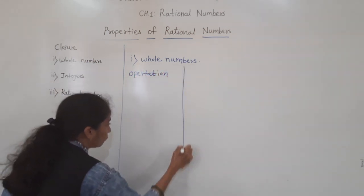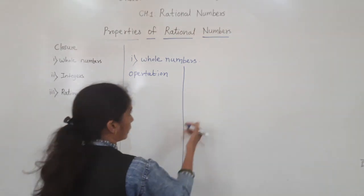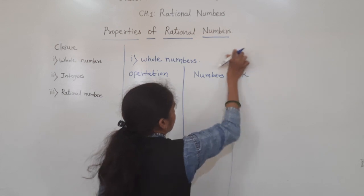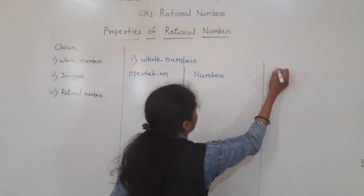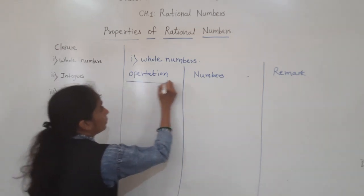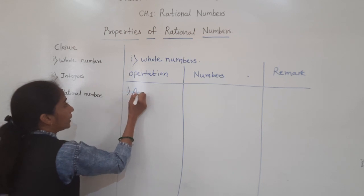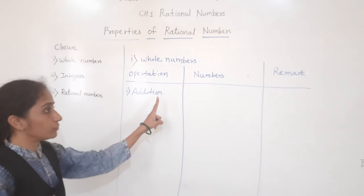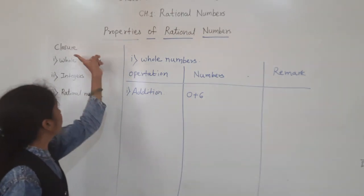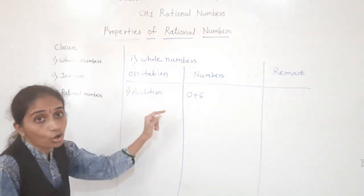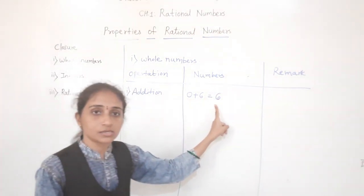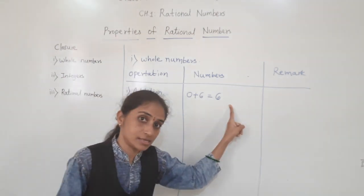We have four operations: addition, subtraction, multiplication, and division. In closure property, first we will look at addition. For 0 plus 6: in closure property for whole numbers, we check whether it works or not. 0 plus 6 equals 6. Is 6 a whole number? Yes, 6 is a whole number.